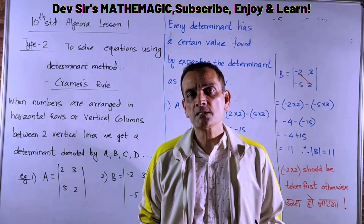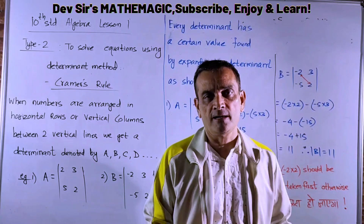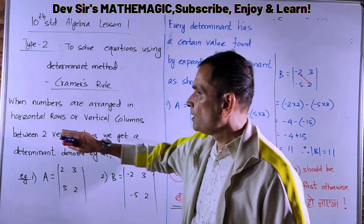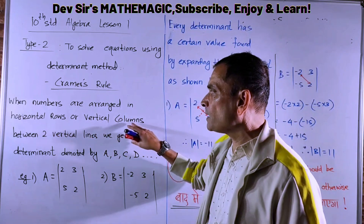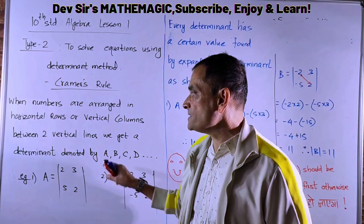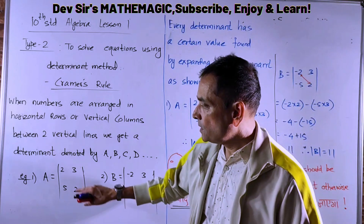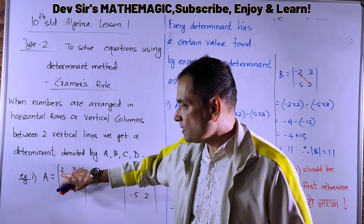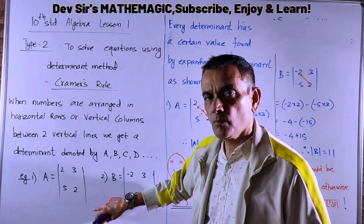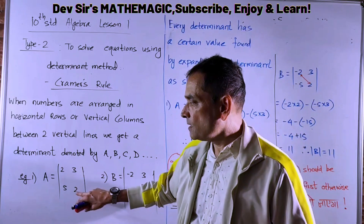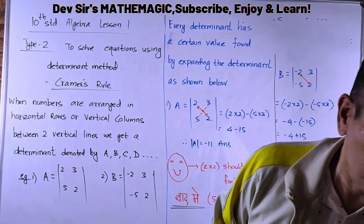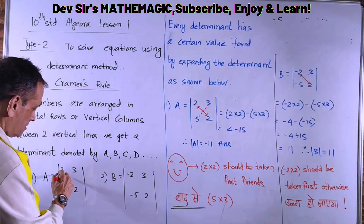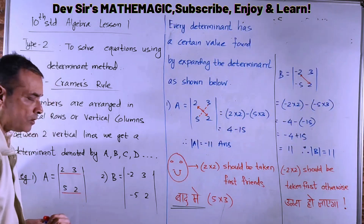Before the determinant method, you should know what a determinant is — this is a new concept. Determinants is a concept introduced in the 10th standard, and continues through 11th and 12th. The basic definition: when numbers are arranged in horizontal rows or vertical columns between two vertical lines, we get a determinant.